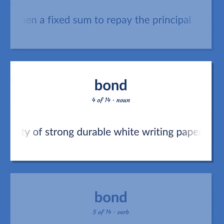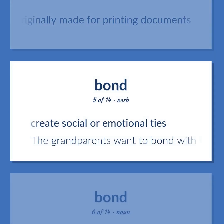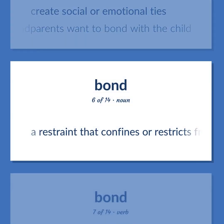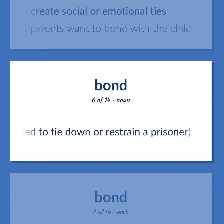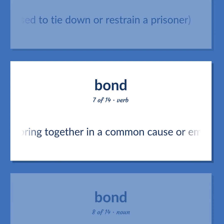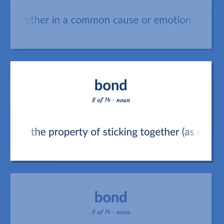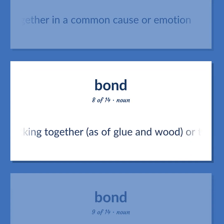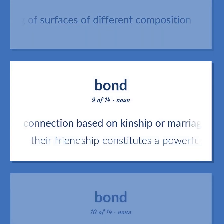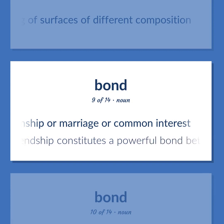Bond: A superior quality of strong durable white writing paper, originally made for printing documents. Create social or emotional ties — the grandparents want to bond with the child. A restraint that confines or restricts freedom, especially something used to tie down or restrain a prisoner. Bring together in a common cause or emotion. The property of sticking together, as of glue and wood, or the joining of surfaces of different composition. A connection based on kinship or marriage or common interest — their friendship constitutes a powerful bond between them.